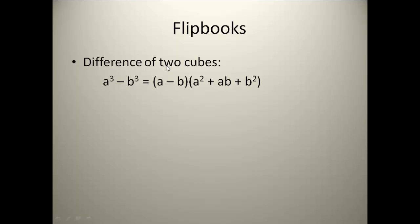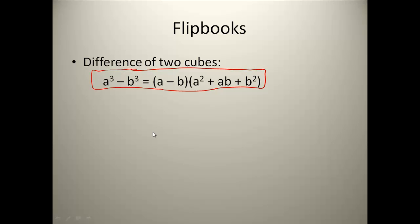Another one that you should have in your second column is the difference of two cubes. You should have a³ - b³ written down on one of the flaps. Go ahead and copy this formula on that tab because this is going to be the formula we use for factoring those. Once you have that formula written down, we are going to do an example.